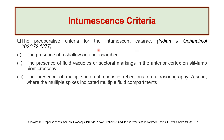One of the papers published in the Indian Journal of Ophthalmology discussed the pre-operative criteria for Intimacy and Cataract and highlighted three points. The first is the presence of a shallow anterior chamber — not all Intimacy and Cataract will have a shallow anterior chamber, however most can. The second, which is the most important definition of this criteria, is the presence of fluid vacuoles or sectoral markings in the anterior cortex on the slit lamp. You should always be able to evaluate the intumescence on the slit lamp clinically pre-operatively.